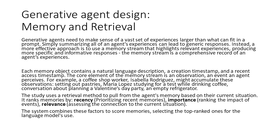Simply summarizing all of an agent's experiences can lead to generic responses. Instead, a more effective approach is to use a memory stream that highlights relevant experiences, producing more specific and informative responses. The memory stream is a comprehensive record of an agent's experiences — each memory object contains a natural language description, a creation timestamp, and a recent access timestamp. The core element is an observation, an event an agent perceives. For example, a coffee shop worker, Isabella Rodriguez, might accumulate observations such as: setting out pastries, Maria Lopez studying for a test while drinking coffee, a conversation about planning a Valentine's Day party, or an empty refrigerator.